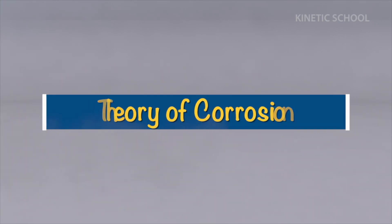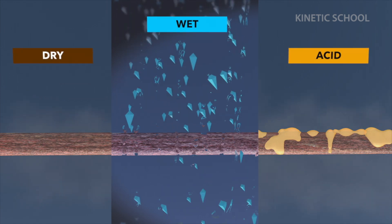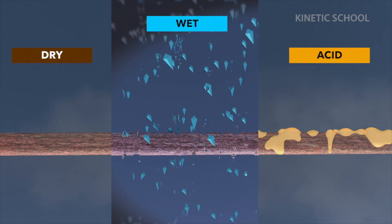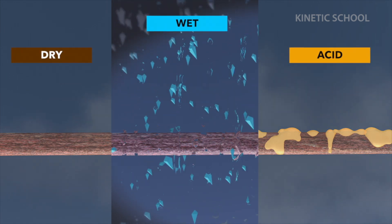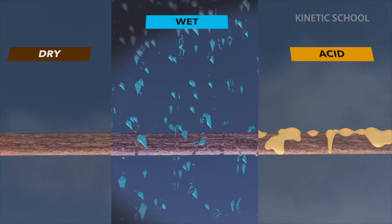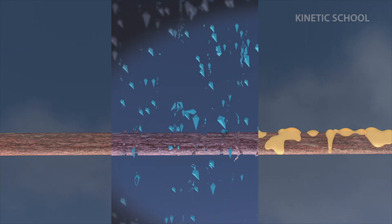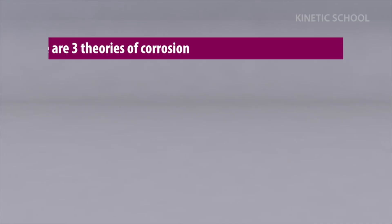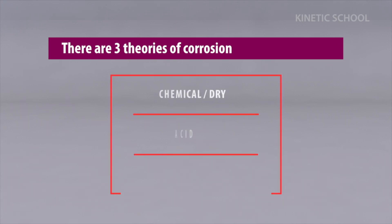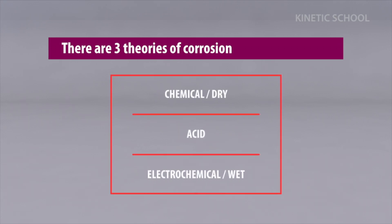Theory of Corrosion. Metallic materials are normally exposed to corrosion in the dry, wet, and acidic environments. There are three theories of corrosion: first is chemical or dry theory of corrosion, another is acid theory of corrosion, and electrochemical or wet theory of corrosion.